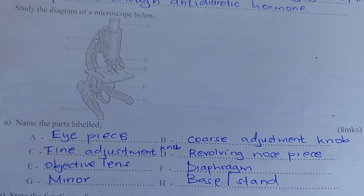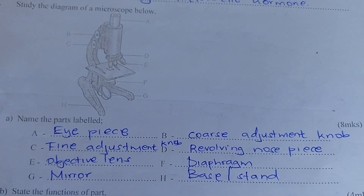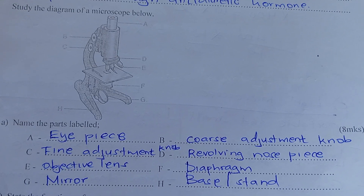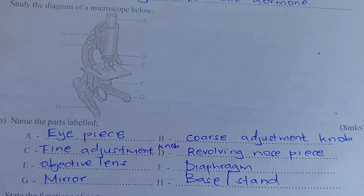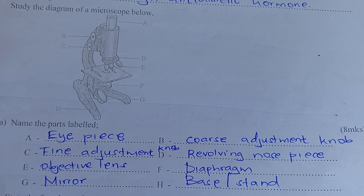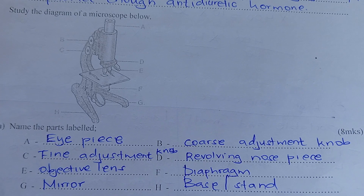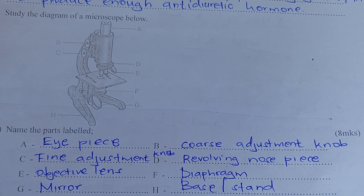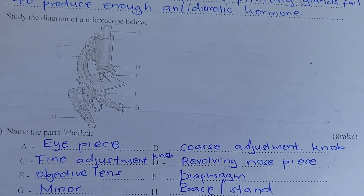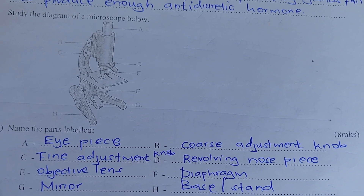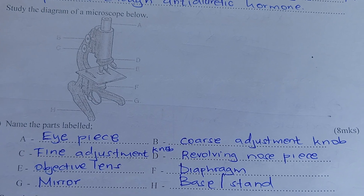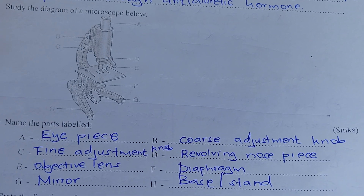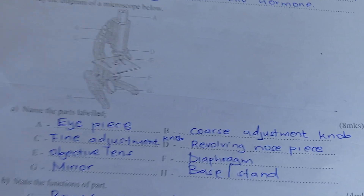Here is a microscope. Labeling the parts A to H: P is the fine adjustment knob, E is the objective lens, G is the mirror, B is the coarse adjustment knob, D is the revolving nosepiece, F is the diaphragm, and H is the base.